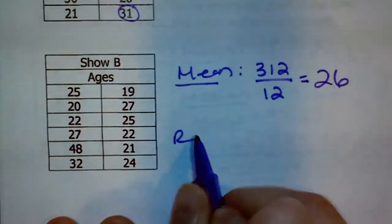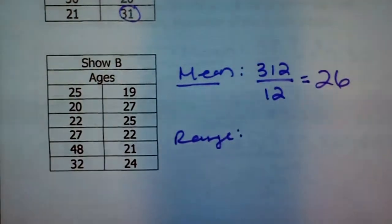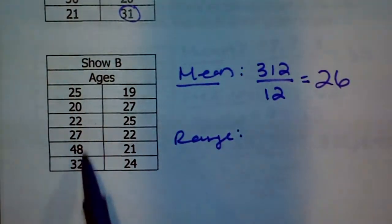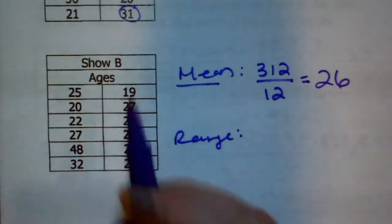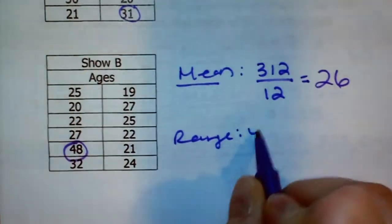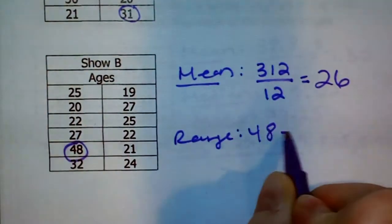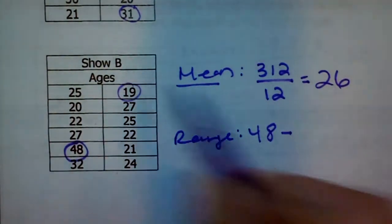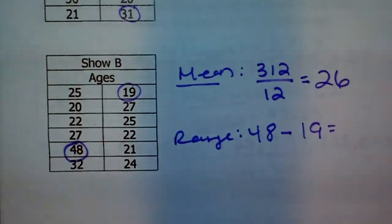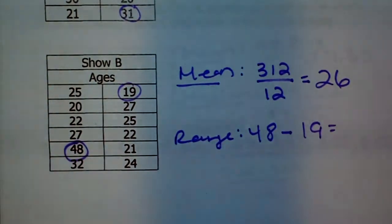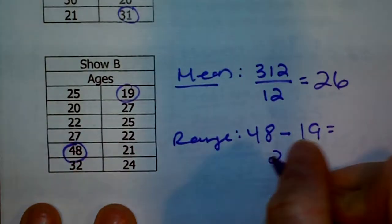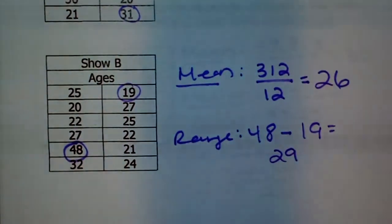The range of ages — the highest here looks to me like the oldest is 48. And the youngest on this one also looks like 19. So we subtract 19 from 48, and this one has a range of 29 years.